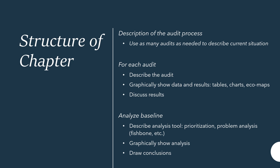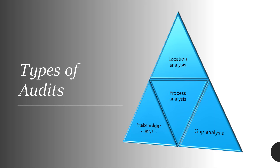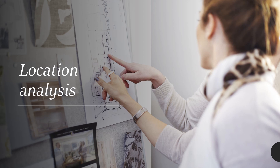Again, describe the analysis tool, apply the tool to your problem, and then draw conclusions. Let's take a look at the different types of audits you might use to get your baseline. In this template, we've already talked about how to do a stakeholder analysis, but there are at least three other types of audits that you might consider: a location analysis, a process analysis, and a gap analysis. We'll examine each one, starting with location analysis.